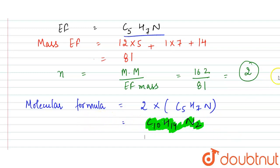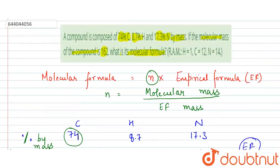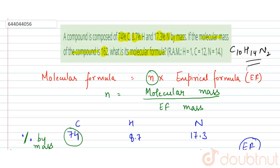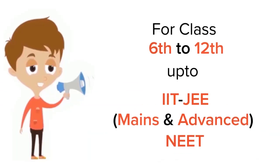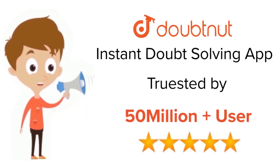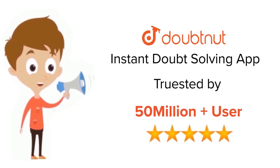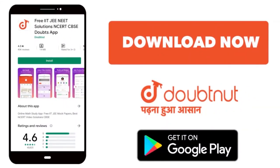So our final answer is C10H14N2. Thank you. For class 6 to 12th, IIT and NEET level, trusted by more than 5 crore students — download DoubtNet today.